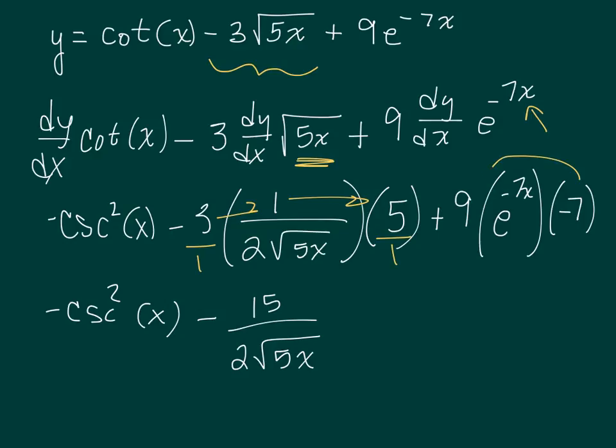And then this last piece I'm going to simply multiply 9 times negative 7 to get negative 63 e to the negative 7x.